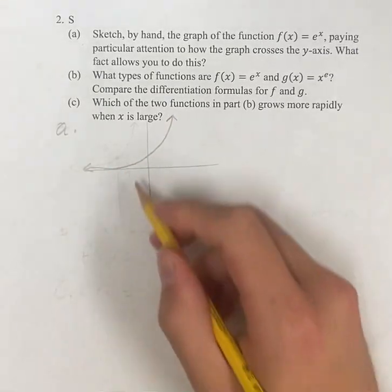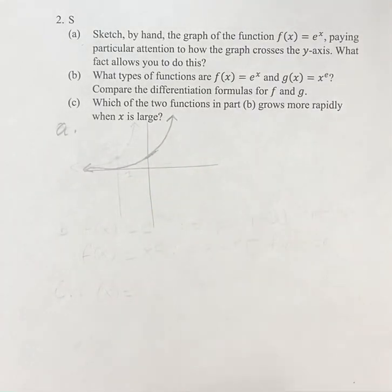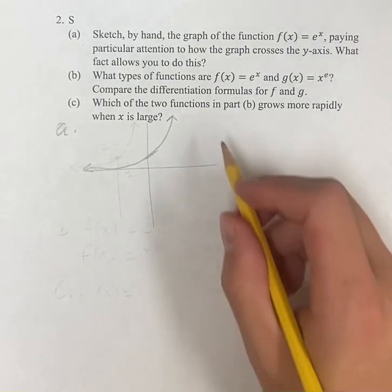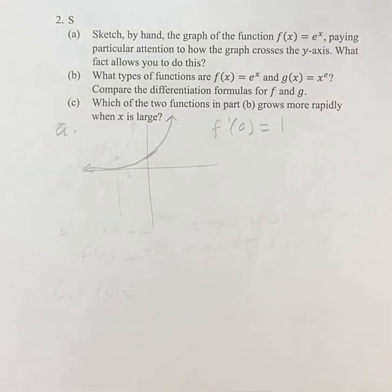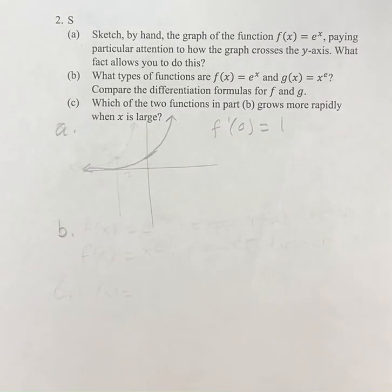So I don't really know why they're asking it, but the slope of the curve at that point is 1. So you can think of f prime of 0 equals 1, that's what they want you to notice. Not super clear based off of a hand-drawn graph, but that's okay.